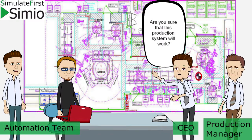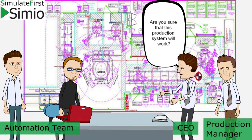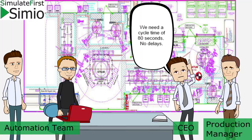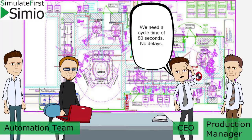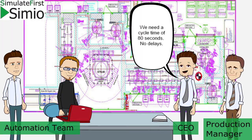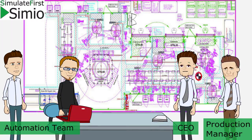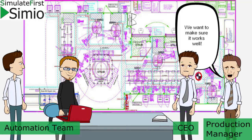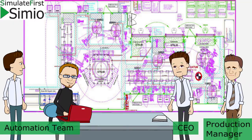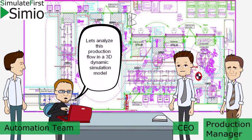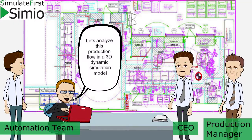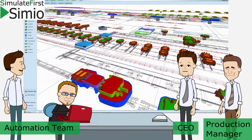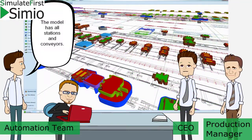Are you sure that this production system will work? We need a cycle time of 80 seconds — no delays. We want to make sure it works well. Let's analyze this production flow in a 3D dynamic simulation model.